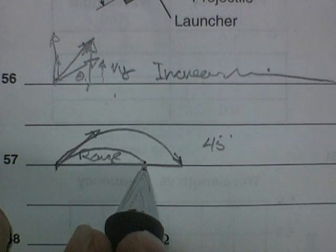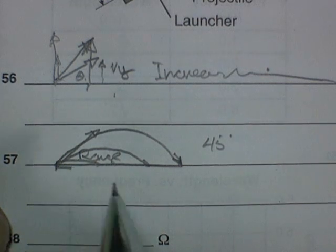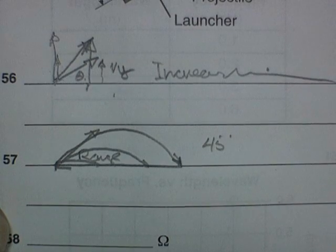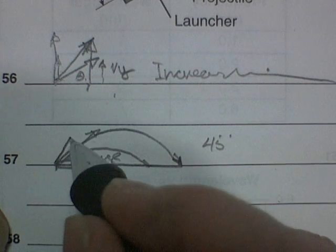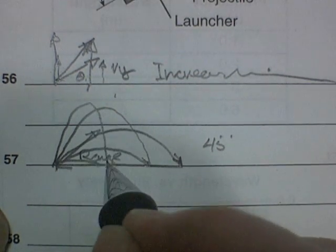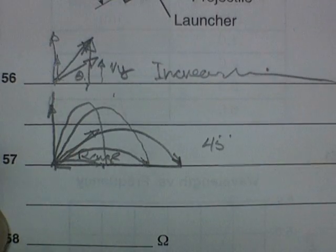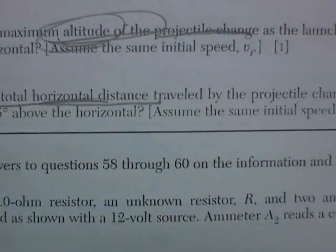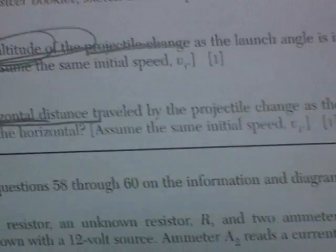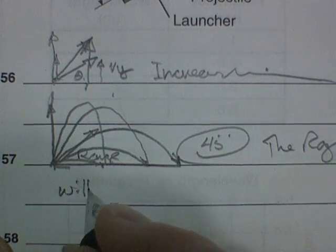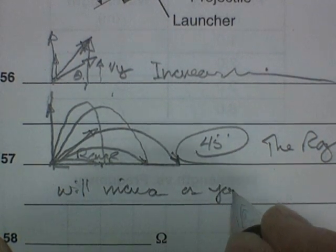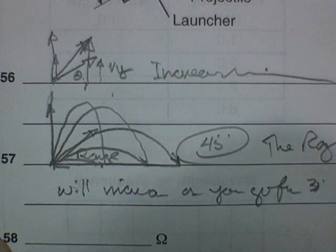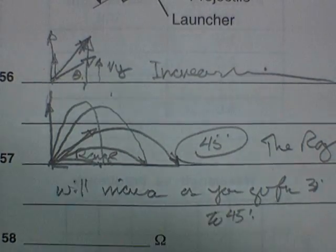If the angle is less than 45 degrees, it just doesn't go as far. Imagine shooting at zero degrees — the thing would just skirt along the ground and not actually travel through the air at all. Likewise, if you're beyond 45 degrees, you shoot it higher and higher but it doesn't go as far, until finally at 90 degrees it goes as high as it possibly can but covers no range at all. So the maximum range is at 45 degrees. How does the total horizontal distance change as the launch angle increases from 30 to 45? That would also increase. The range will increase as you go from 30 degrees to 45 degrees.